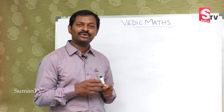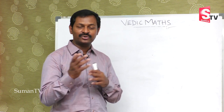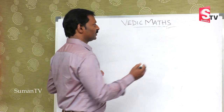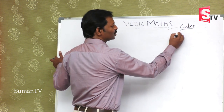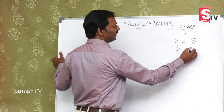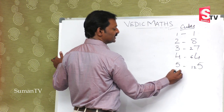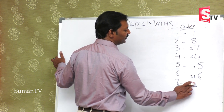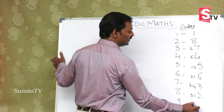So, if we are doing square root: 1 square is 1, 2 square is 4, 3 square is 9, 4 square is 16, 5 square is 25. Now I will write down cubes. 1 cube is 1, 2 cube is 8, 3 cube is 27, 4 cube is 64, 5 cube is 125, 6 cube is 216, 7 cube is 343, 8 cube is 512, and 9 cube is 729.